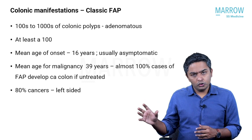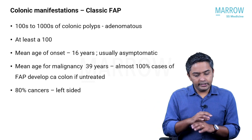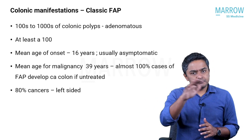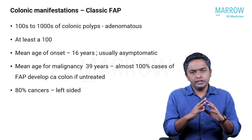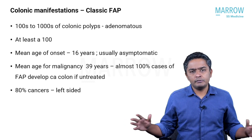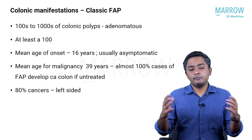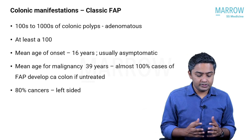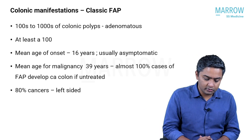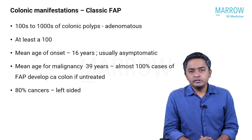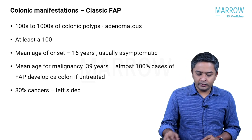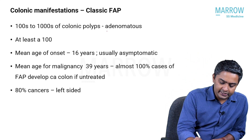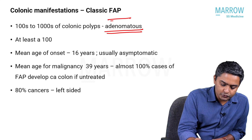Usually the whole colon — the entire right, left, and transverse colon — will be studded with innumerable polyps, usually thousands of multiple polyps, but at least a hundred is required. These polyps are essentially adenomas.